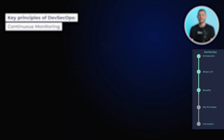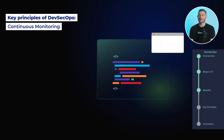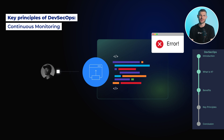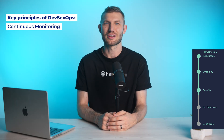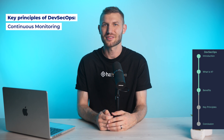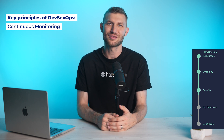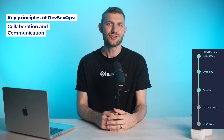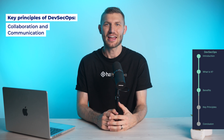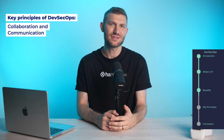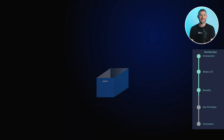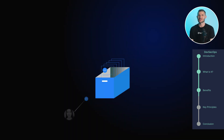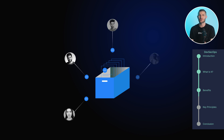Continuous monitoring: DevSecOps promotes continuous monitoring of applications and infrastructure to detect and respond to security threats in real time. This includes monitoring for unusual behavior, analyzing logs and metrics, and implementing proactive security measures to prevent attacks. Collaboration and communication: DevSecOps encourages close collaboration and communication between development, operations, and security teams. Breaking down silos and fostering a culture of shared responsibilities allows teams to work together effectively to address security issues.